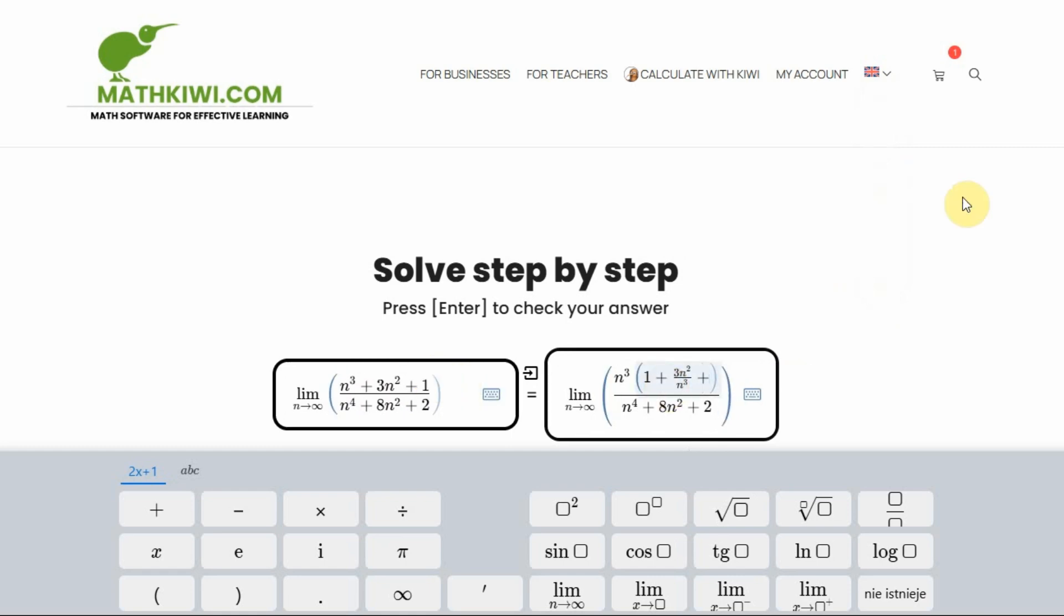And the same here. 1 over n to the third, right? Look at the numerator.